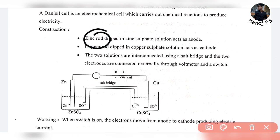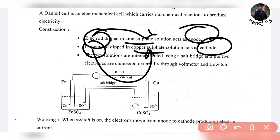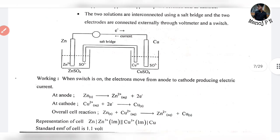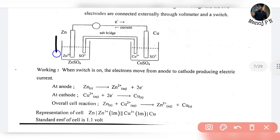Construction: Zinc rod dipped in zinc sulfate solution acts as anode. Copper rod dipped in copper sulfate solution acts as cathode. The two solutions are interconnected using a salt bridge, and the two electrodes are connected externally through a voltmeter and switch. The diagram shows Zn|ZnSO4 and Cu|CuSO4.